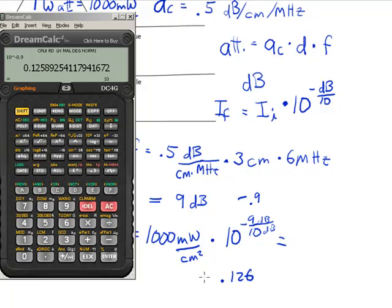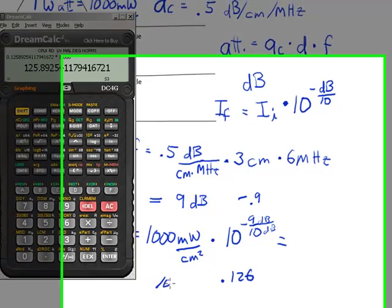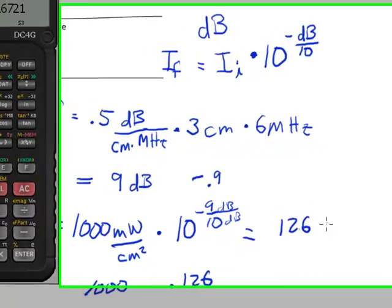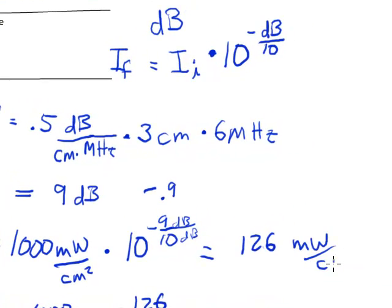I'll just take three decimal places for now. And so, and then if I multiply that by 1000 times 1000. That's equal to 125.9 or let's just make that round up around the three decimals here. 126 milliwatts per square centimeter.